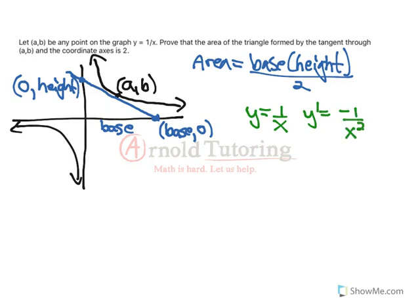That's the derivative of 1 over X. So we know that the slope of this line is negative 1 over X squared. Okay, so there's base, there's height, there's A, there's B, there's X's going on.